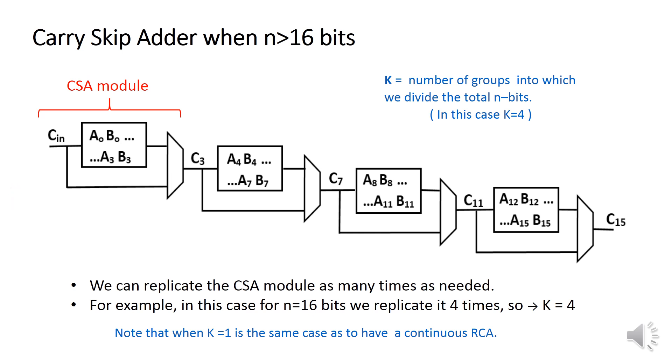So the idea is to split all the n bits in groups, hoping that at least in some of the groups all the propagate signals are 1 and I can take the bypass. We name k the number of groups into which we divide the total n bits. Note that when k is equal to 1, it is the same case as to have a continuous ripple carry adder in the main line.